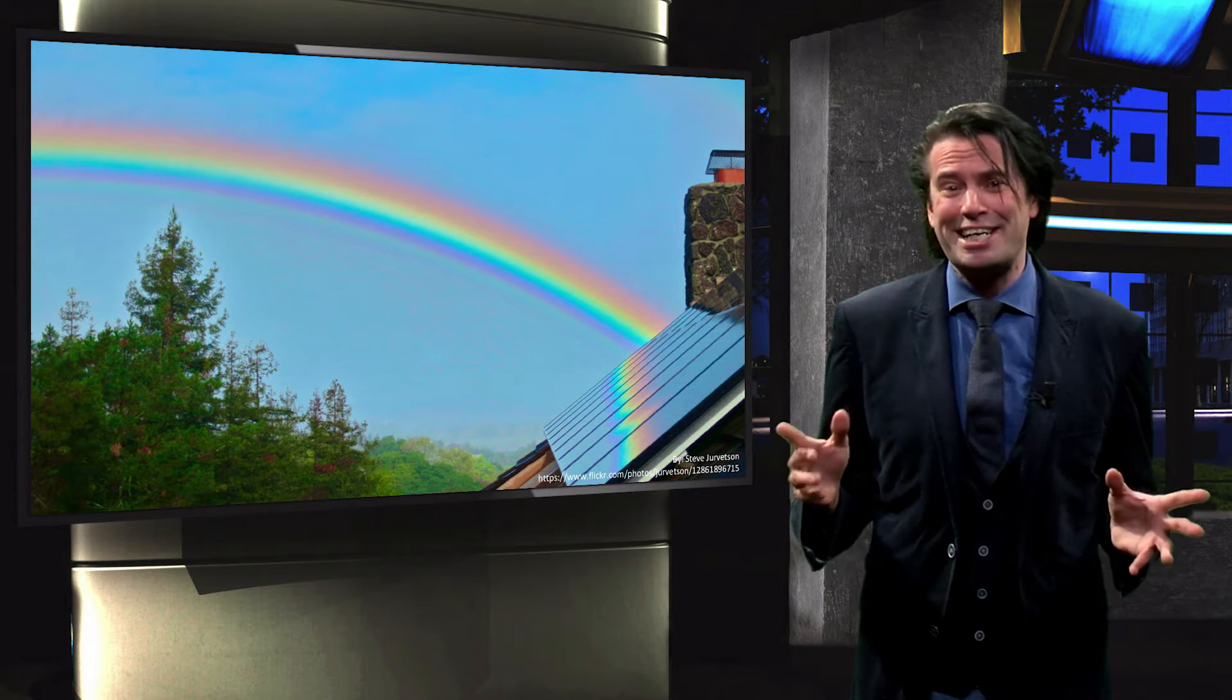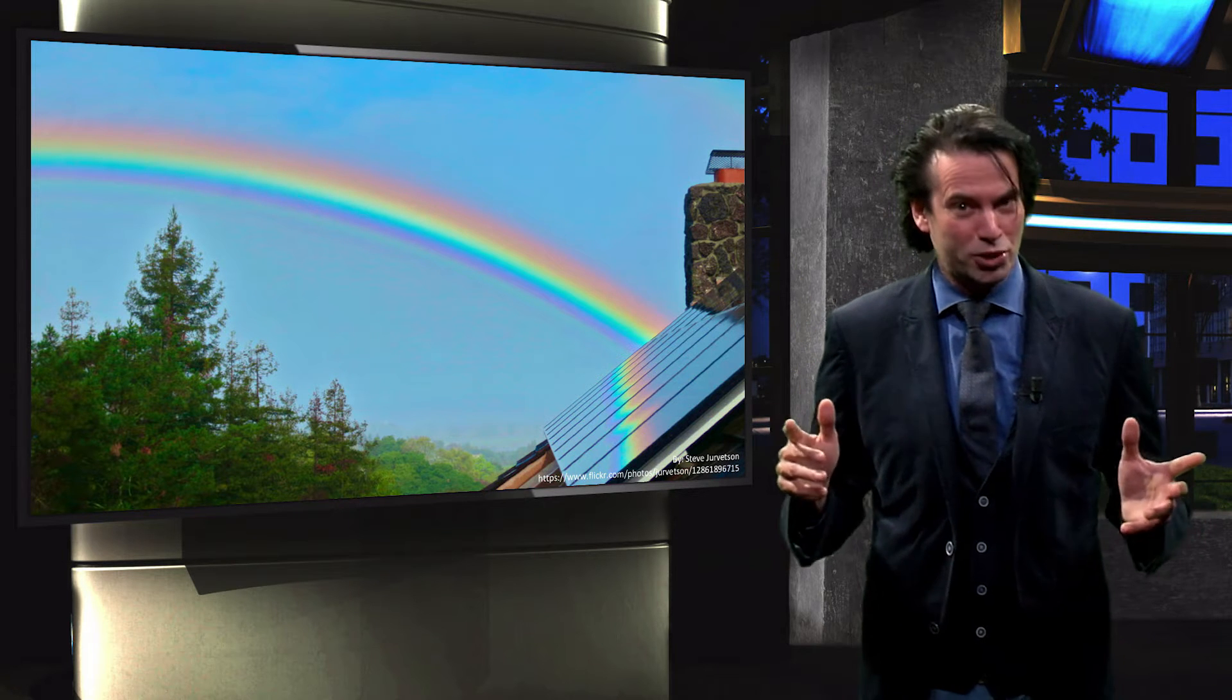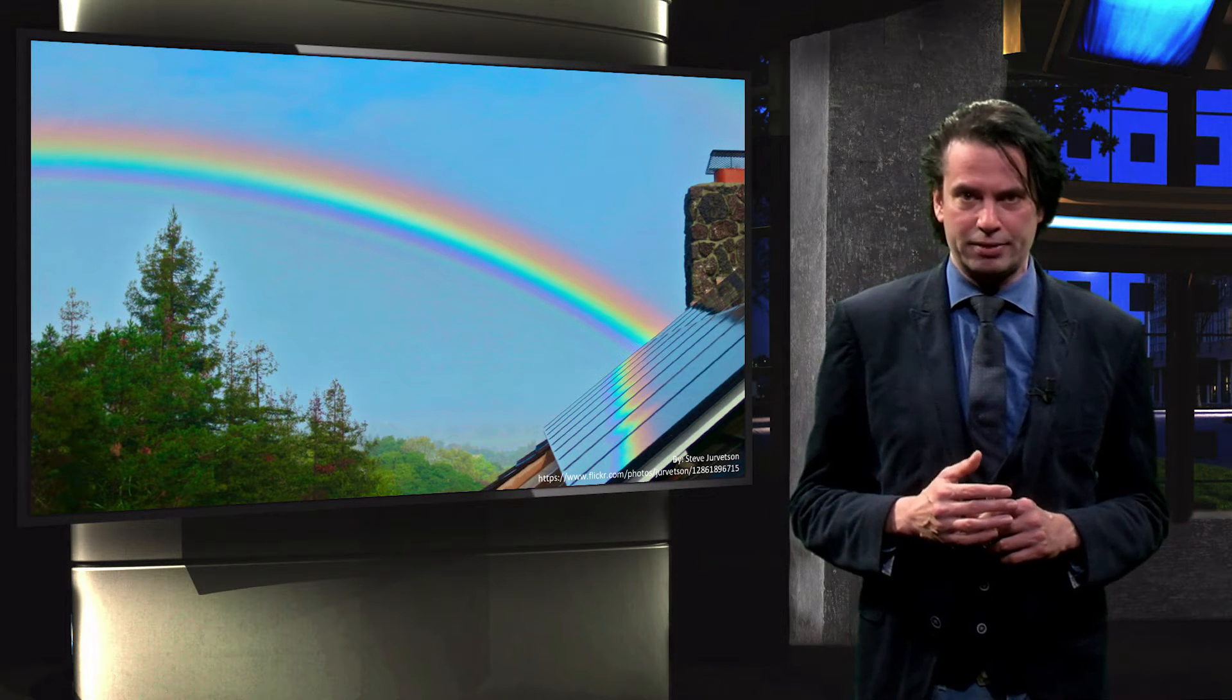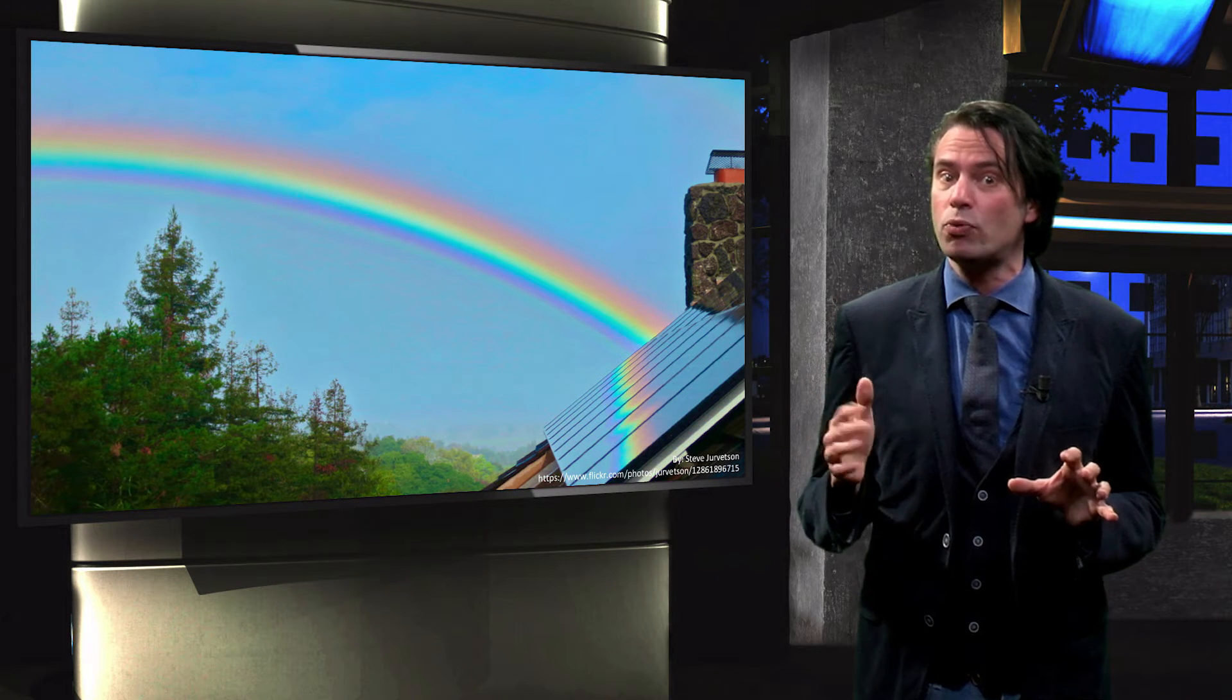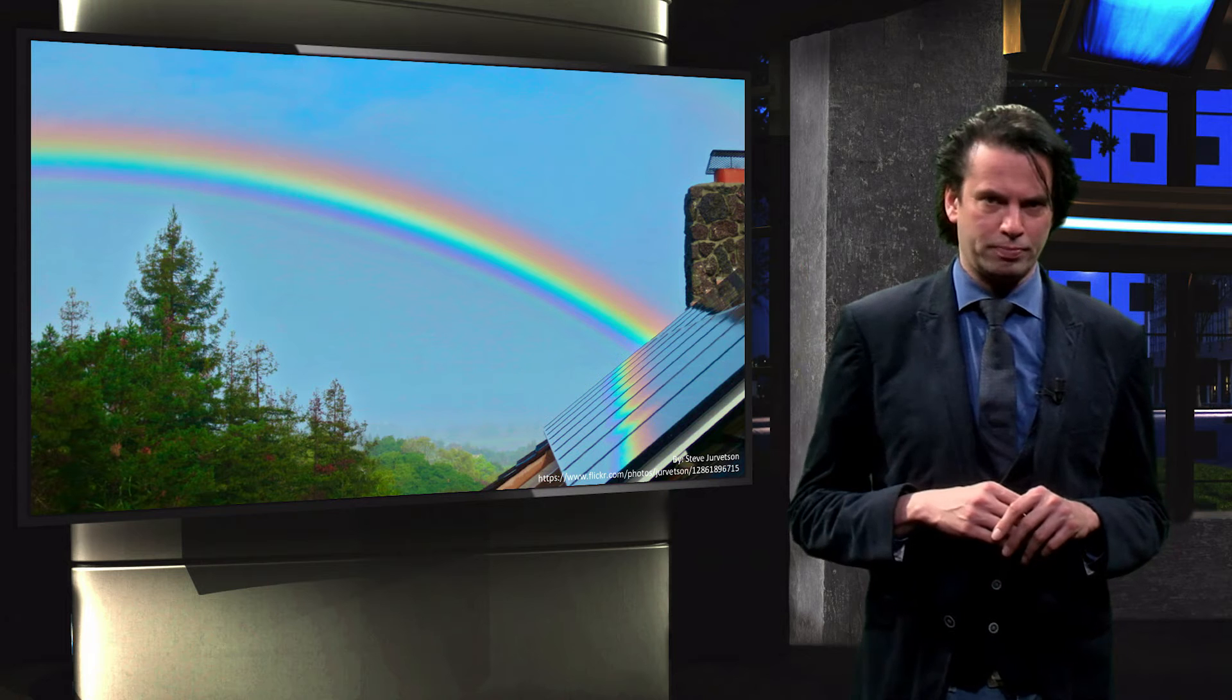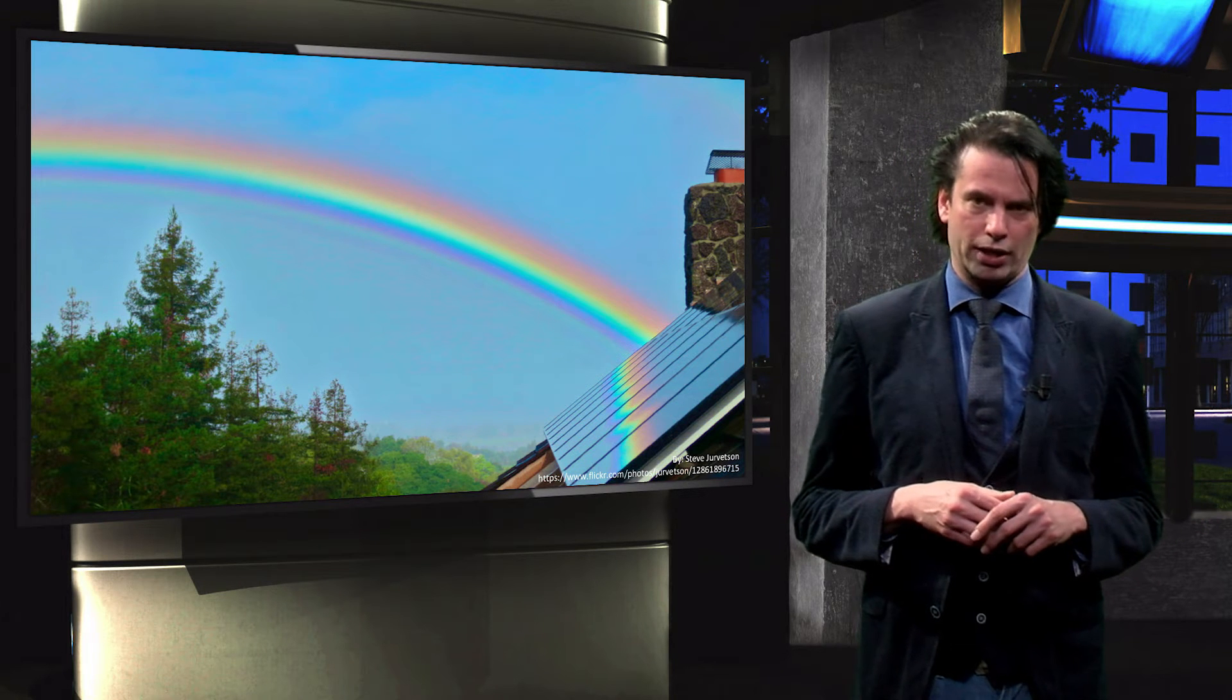What better way is there to start our discussion than with one of nature's precious phenomena, a rainbow in a clear blue sky? Incidental light encounters tiny water particles in the ambient air. Since not all wavelengths are refracted equally, we can observe the full spectrum of the visible light stacked neatly in a colorful rainbow. Rainbows are perhaps the most famous examples of the refraction and dispersion of light.